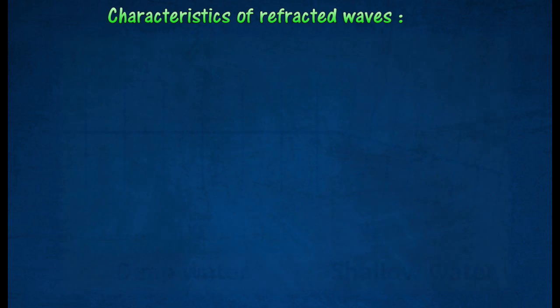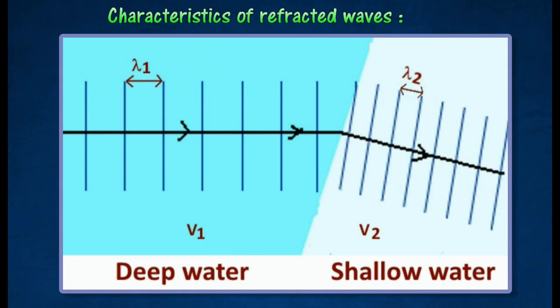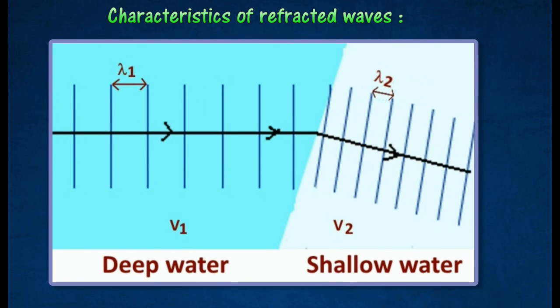Assume the speed at deep region to the shallow region are v1 and v2 respectively. Let the wavelength of the waves at the two regions be lambda1 and lambda2 respectively. The frequency f of the waves in the two regions remains constant.